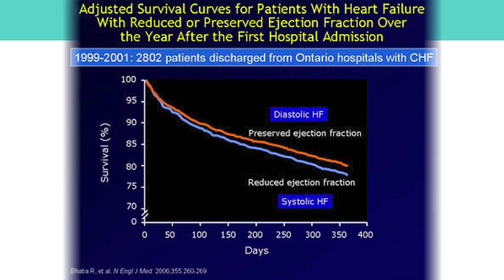Which one is better to have? This is a Canadian study on 2,800 patients. They followed these patients for a year — the blue is systolic heart failure and the yellow is diastolic heart failure. You can see they are equally bad.